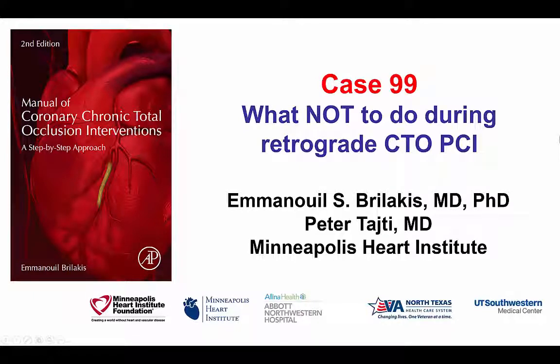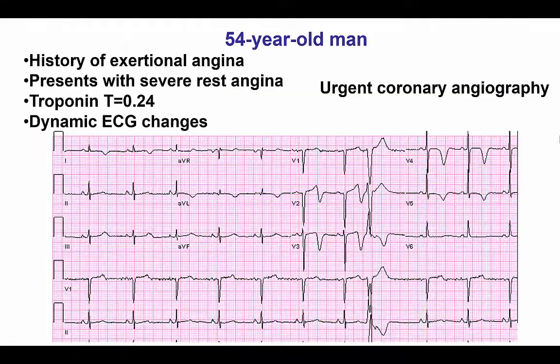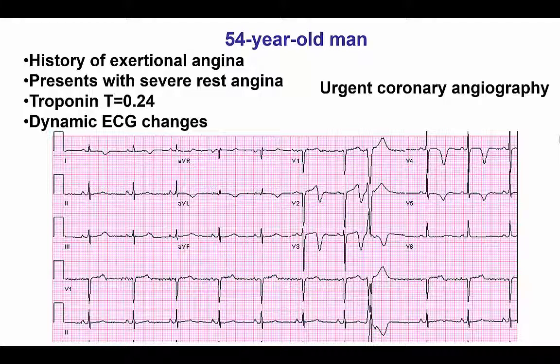This is Manos Brilakis and Peter Taiti from the Minneapolis Heart Institute. This is case 99 for the second edition of the Manual of CTO Interventions — a case that illustrates what should not be done during retrograde CTO interventions. This was actually my first retrograde case done almost a decade ago, and the value today is to demonstrate the things we did not know then but do know now, and what should and should not be done to have the best outcomes with retrograde intervention.